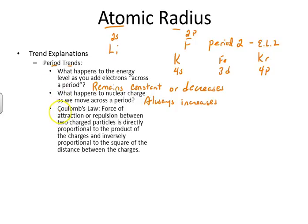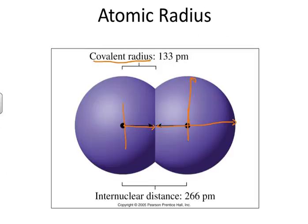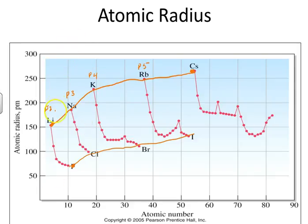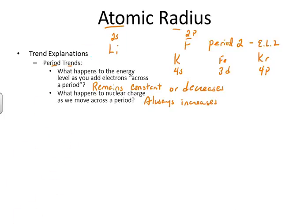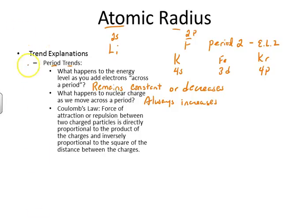Here's our scenario: we need to explain how these two facts produce the period trend. The period trend is that as we move across the period, we get, in general, a decrease in atomic size — size decreases from left to right.